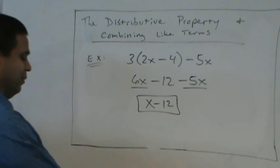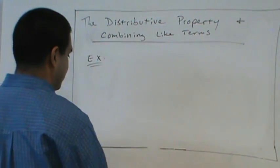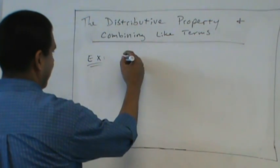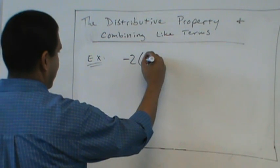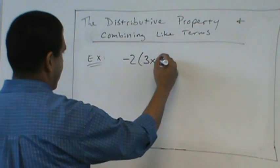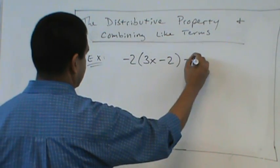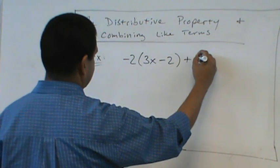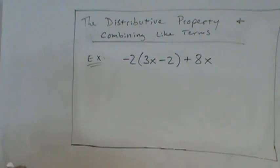All right. So I'll give you one. You try this with your partner. Make sure you can get it right. Try that: -2(3x-2)+8x.